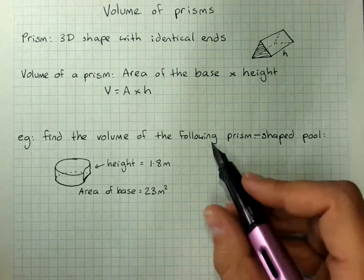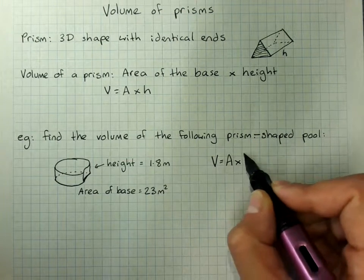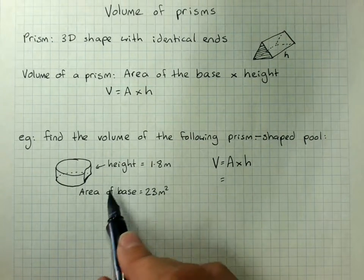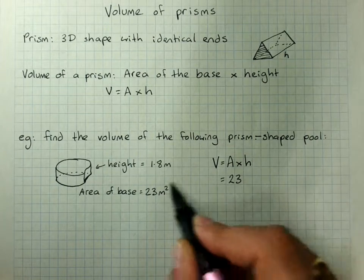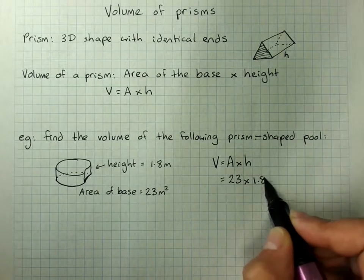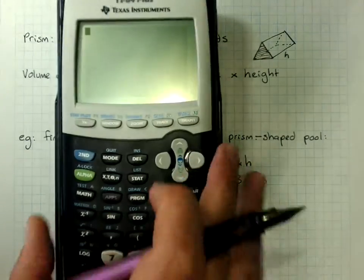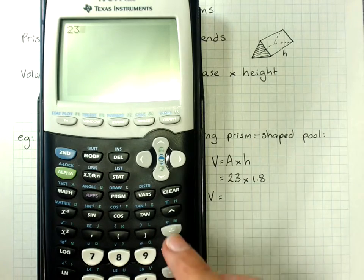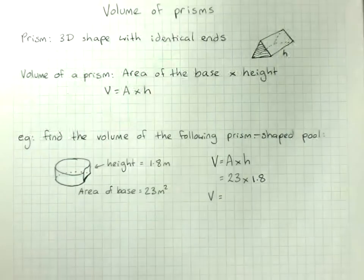and we can find the volume. We write the formula, V equals A times H. We put our equals sign underneath. The area of the base was 23 meters squared times 1.8 is the height. And we use our calculator, 23 times 1.8, 41.4.